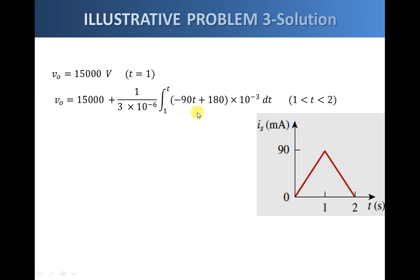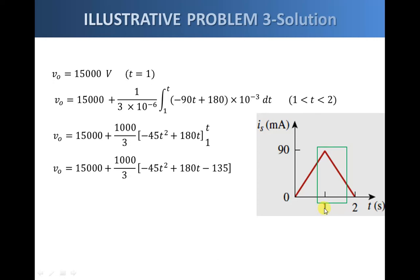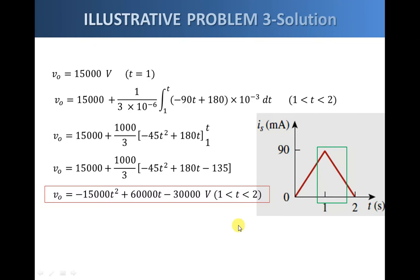We identify the equation for the current between one and two seconds. Applying algebra, we get negative 90t plus 180 milliamps as the equation of that line. Performing the integration and applying the limits, we get the voltage across the capacitor between one and two seconds. Simplifying, we arrive at the final expression for voltage between one and two seconds.